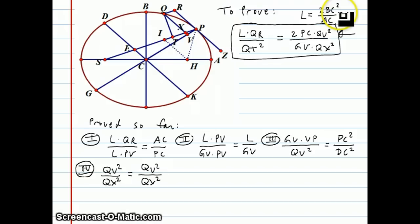It's actually equal to 2 times BC squared, where BC is the semi-minor axis, over AC, which is the semi-major axis.